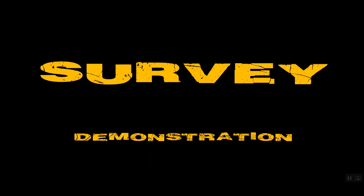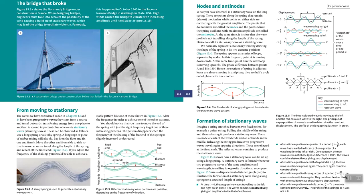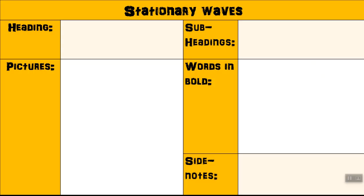Firstly, we're going to look at surveying. You can go to your textbook page 211, 212, and I'm going to demonstrate on these two pages how to survey. In your guided notes, you have a note like this. We're going to be looking at headings, subheadings, pictures, words in bold, and side notes.